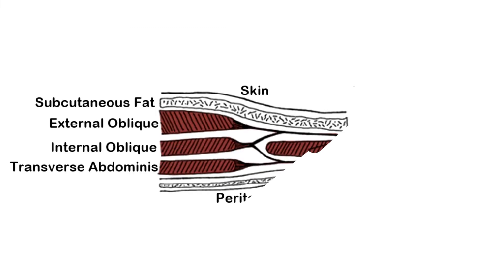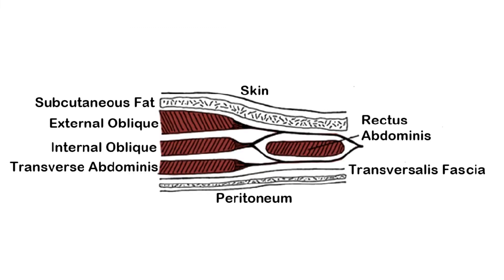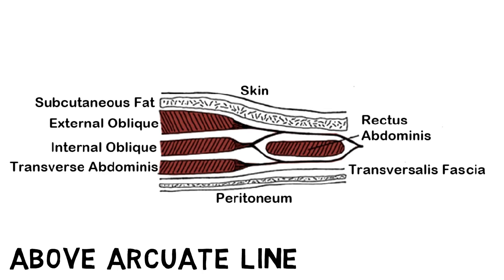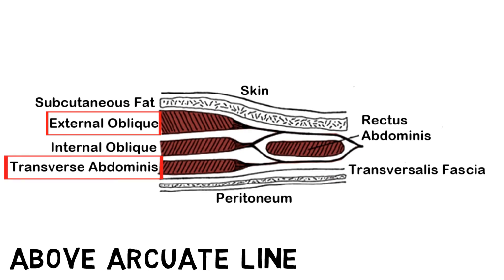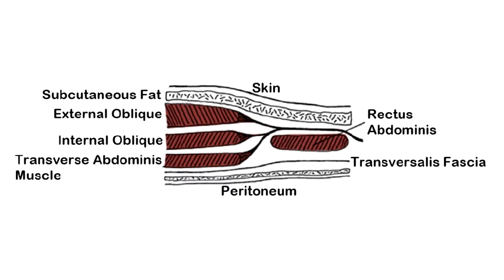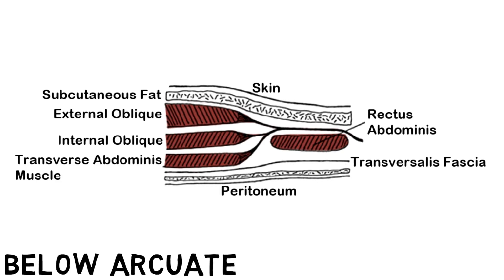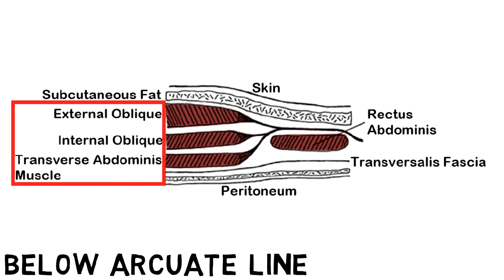Now let's have a look at the rectus sheath. This is the rectus sheath above the arcuate line, or the upper part. The anterior layer of the upper part is formed by the aponeurosis of the obliques, and the posterior layer is formed by the transverse abdominis muscle. This is the lower part, or the part below the arcuate line. The anterior layer is formed by the aponeurosis of the obliques and the transverse abdominis, and the posterior layer is formed by the transverse fascia only.